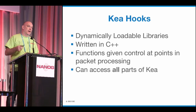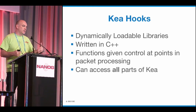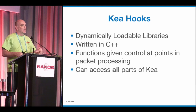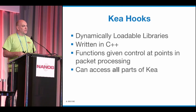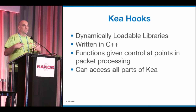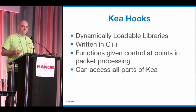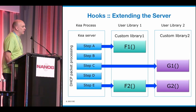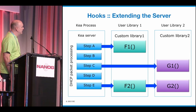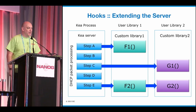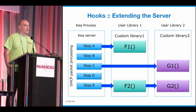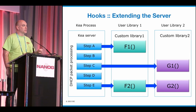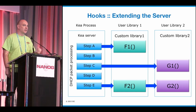The important thing is that you have DHCP traffic happening, and what these hook points allow you to do is insert your own logic at differing places in the process. We have the DHCP packet processing going on, and at various points in this processing, we can call out to custom code that either you write yourself or we write. We have a couple of hooks available with Kea. In Facebook's example, they did all this themselves.